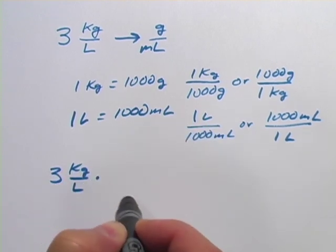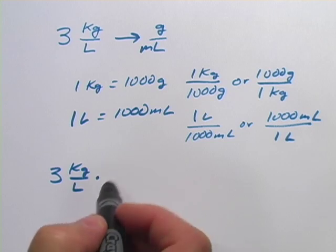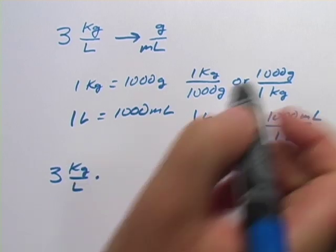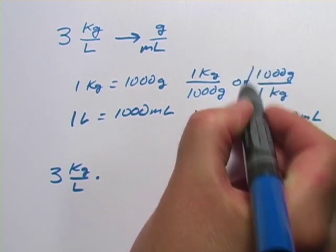I want a conversion factor, a scale factor that's going to have the kilograms on the bottom so that the kilograms cancel out, leaving me with grams on the top. So it looks like it's going to be this one.